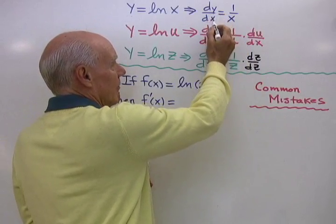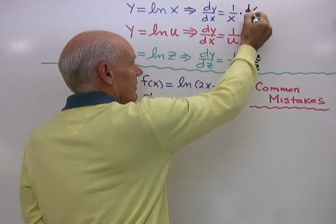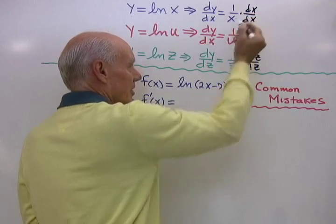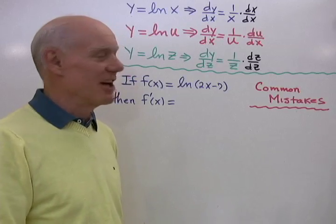Likewise up here, the derivative of y with respect to x is 1 over x times the derivative of the argument x with respect to the thing we're differentiating with respect to, which is x. And again, dx dx is just 1.